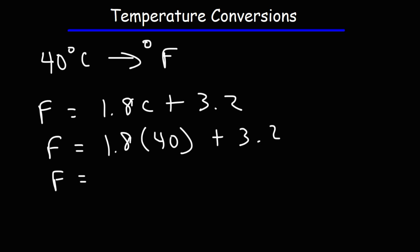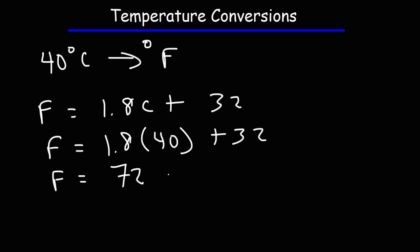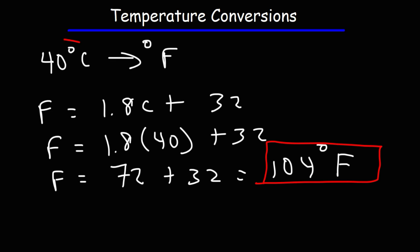So 1.8 times 40 — let's use a calculator for that — is 72. And 72 plus 32 is 104. So a temperature of 104 degrees Fahrenheit is equal to a Celsius temperature of 40 degrees.